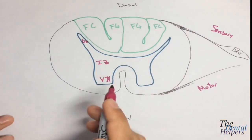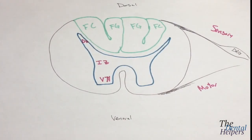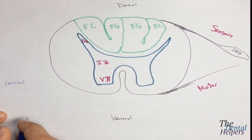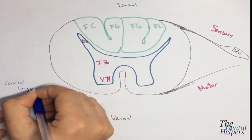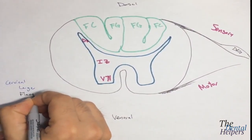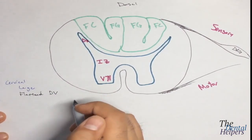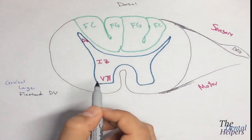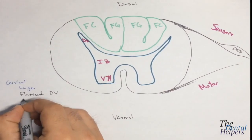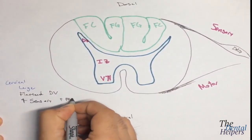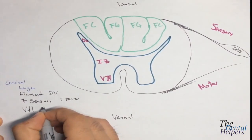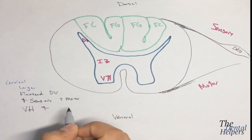In the cervical region of the spinal cord, we're going to see something different than what we'd expect in the thoracic or lumbar. In the cervical region, the spinal cord is going to be larger and flattened dorsal-ventrally. It has large columns of white matter, meaning there are more sensory and motor tracks in this region. The ventral horn is also going to be larger because it's innervating the muscles of the upper extremities.